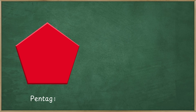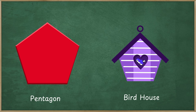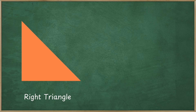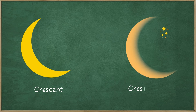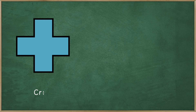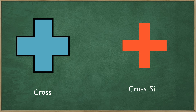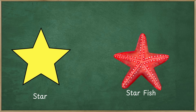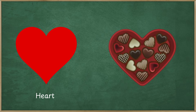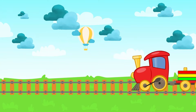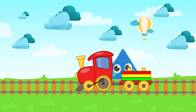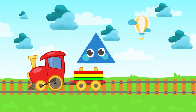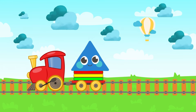Pentagon — Birdhouse. Right Triangle — Sandwich. Crescent — Crescent moon. Cross — Cross sign. Star — Starfish. Heart — Chocolate Heart.